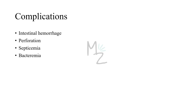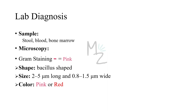Complications include intestinal hemorrhage, perforation, septicemia, and bacteremia. Lab diagnosis: we'll need samples of stool, blood, and bone marrow. In enterocolitis, the organism is most easily isolated from a stool sample. In enteric fevers, blood is used for isolating Salmonella. The organism is also isolated from bone marrow. On gram staining, Salmonella appears gram negative — it does not retain the crystal violet dye and takes on a pink color.